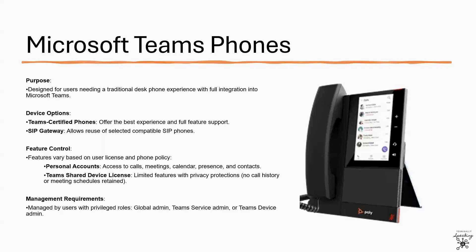You can control what capabilities are available depending on the type of license and phone policy assigned to the user signing into the phone. For example, users can sign into a phone with their personal accounts and can access calling, meetings, calendar, presence, and contact functionality. Accounts assigned a Teams shared device license may only get access to a limited range of features. Call history and meeting schedules won't be retained to protect users' privacy. To manage phones, you need a privileged account with the role of global admin, Teams service admin, or Teams device admin.